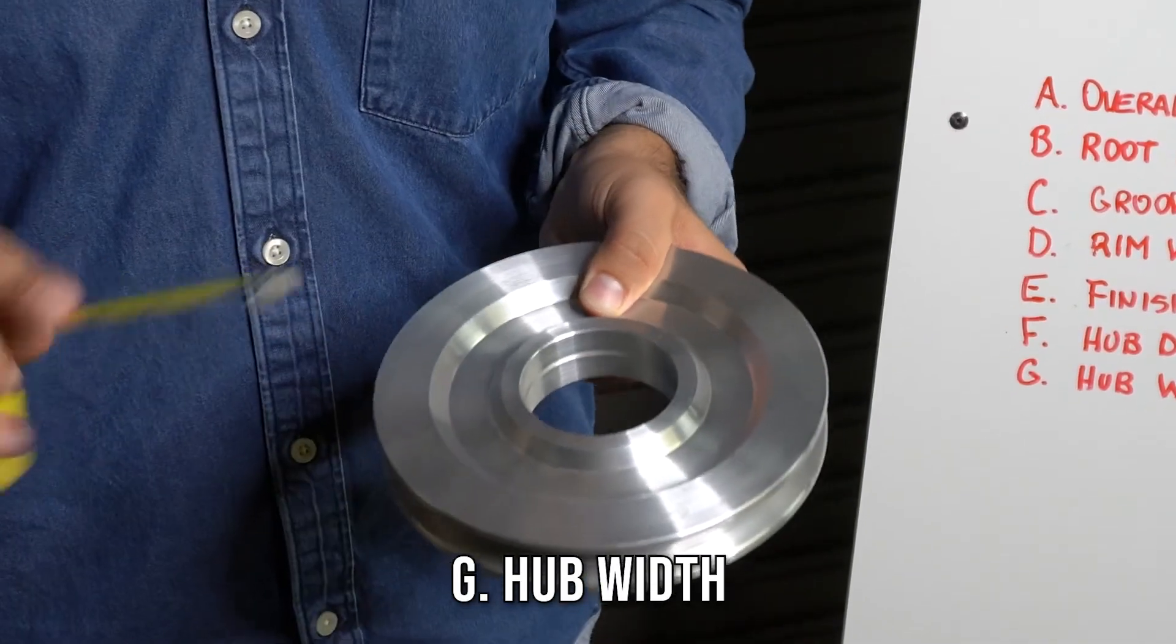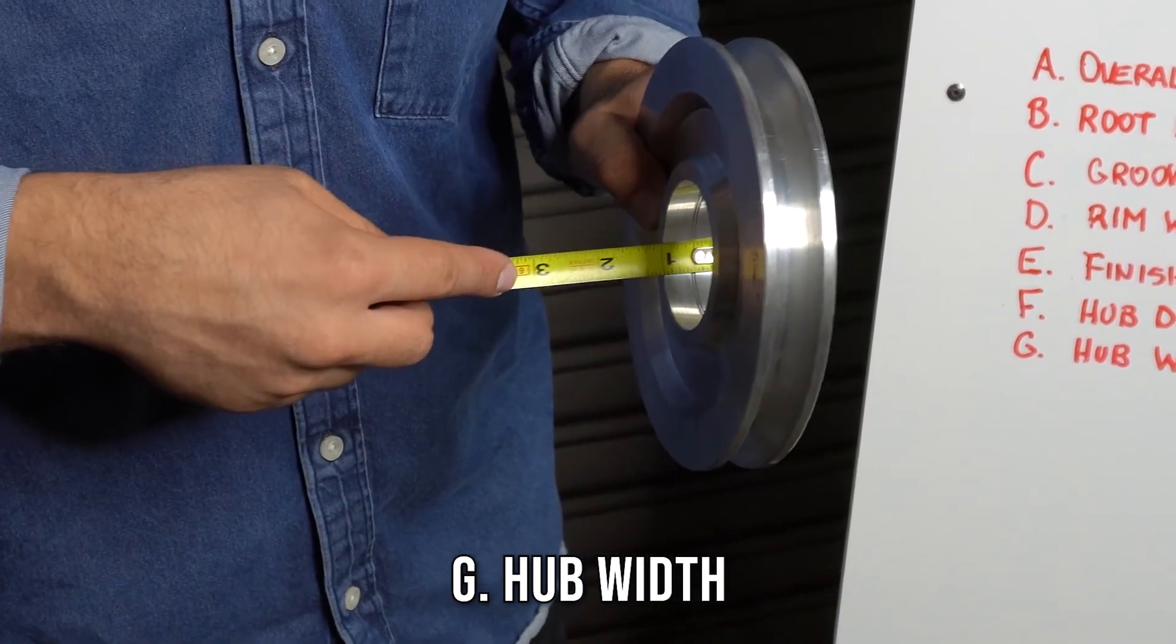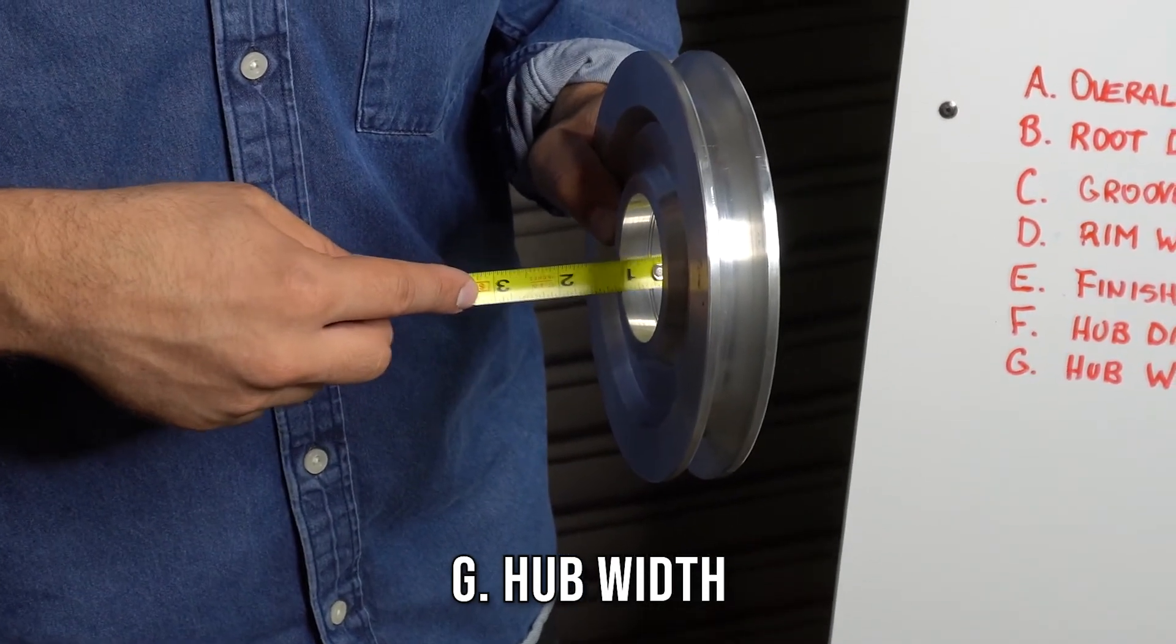For the hub width, we put the ruler in the bore and we measure the width of the hub, which in this case is one inch.